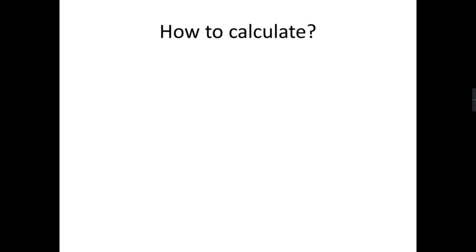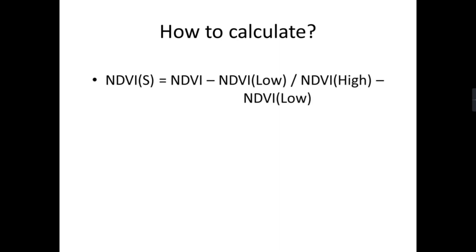After creating the NDVI, we need to create another variable named NDVI_S. The formula for NDVI_S is: NDVI image minus the lowest value of the NDVI image, divided by the highest value of the NDVI image minus the lowest value of the NDVI image. So we need three things: the NDVI image itself, and then the lowest and highest values in that image. Using these three parameters, we can generate the NDVI_S variable.